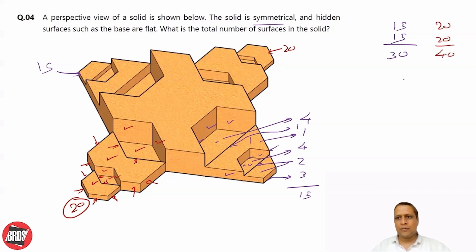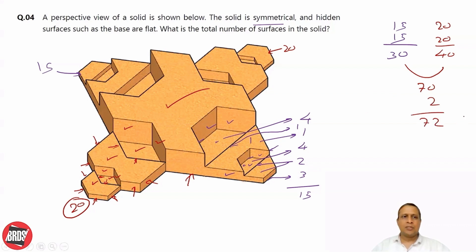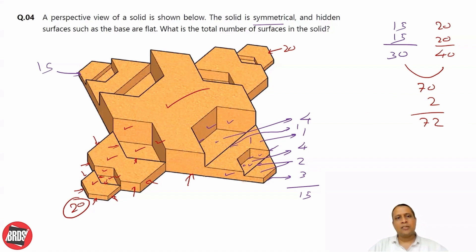So far 30 plus 40 gives us 70. Adding one top and one bottom surface, 70 plus 2 equals 72. So there are 72 surfaces in this solid.